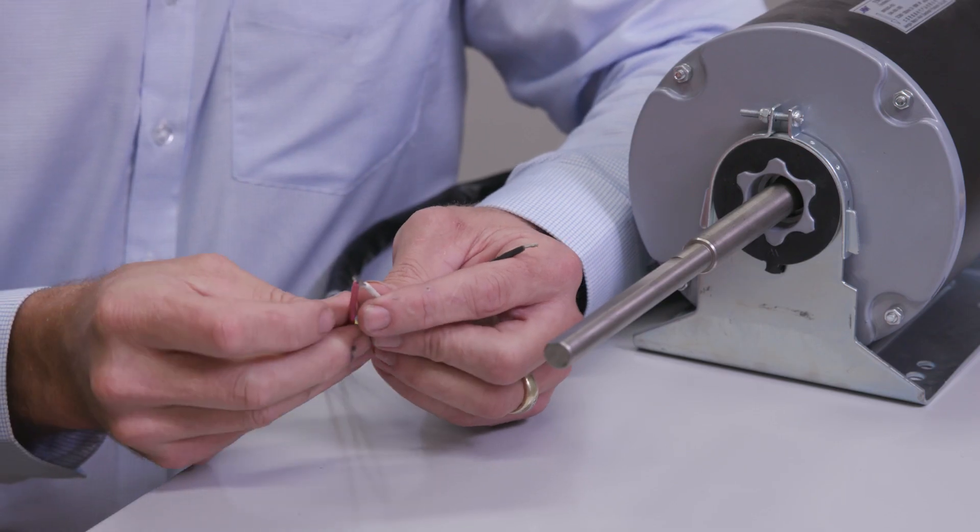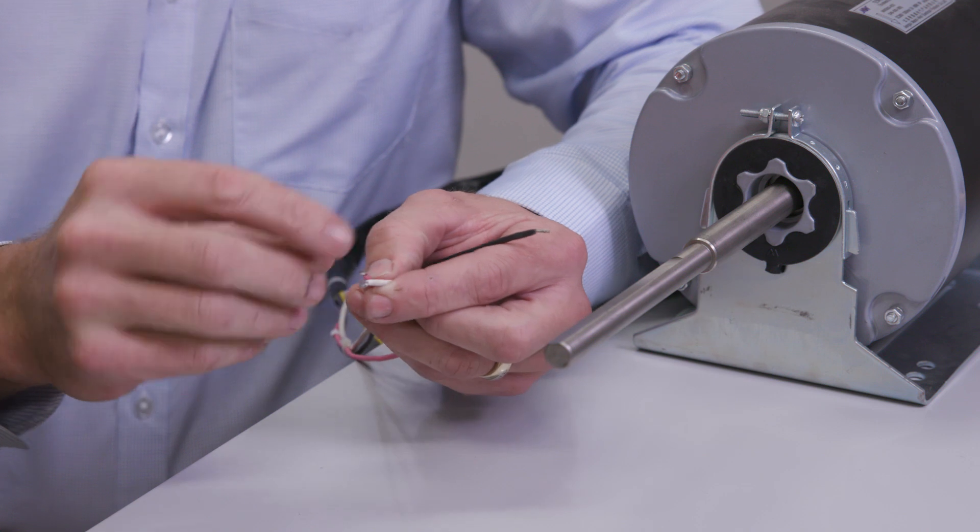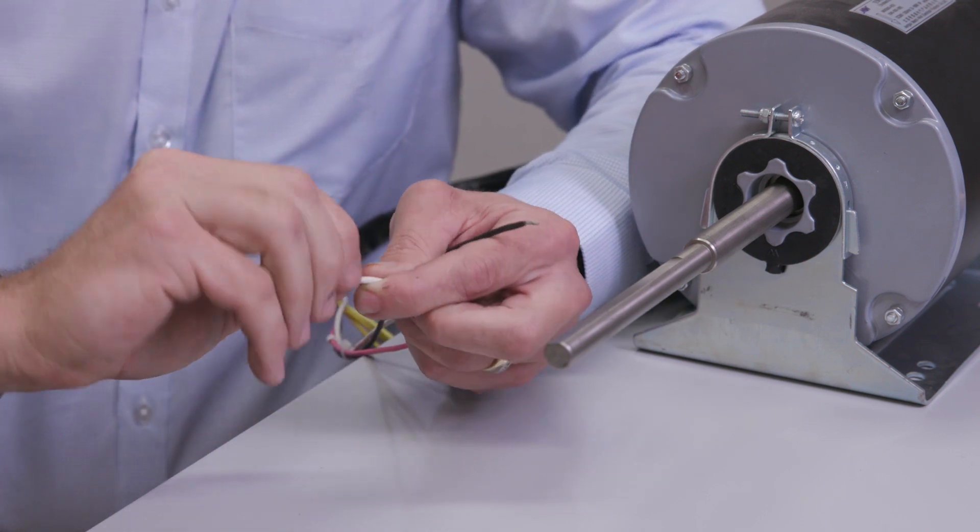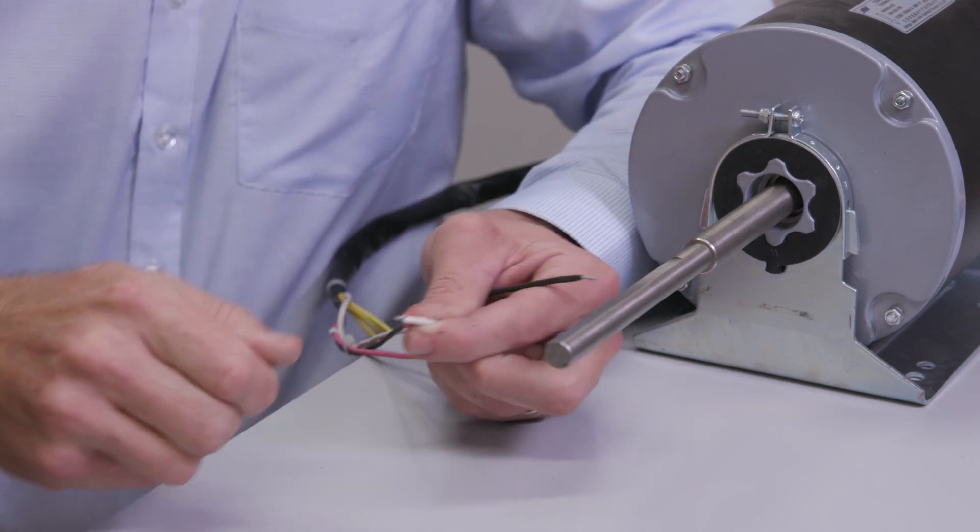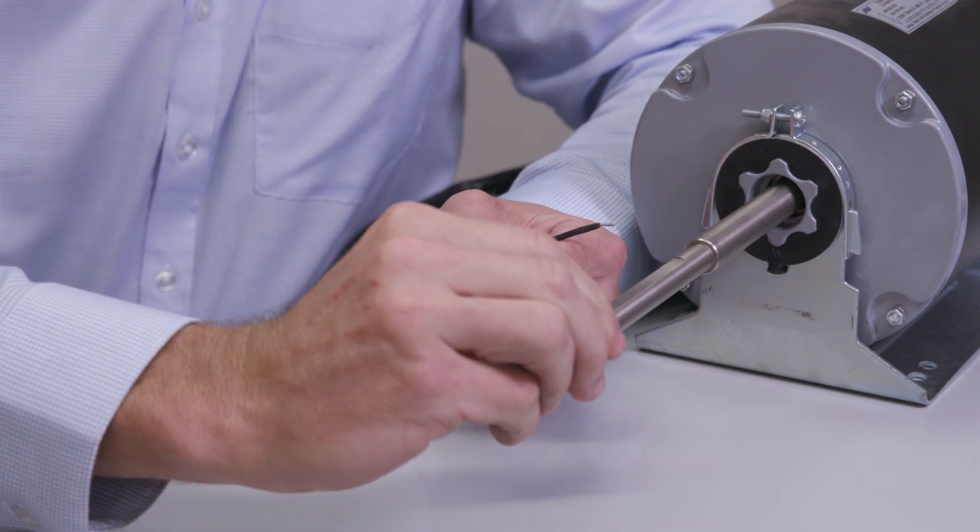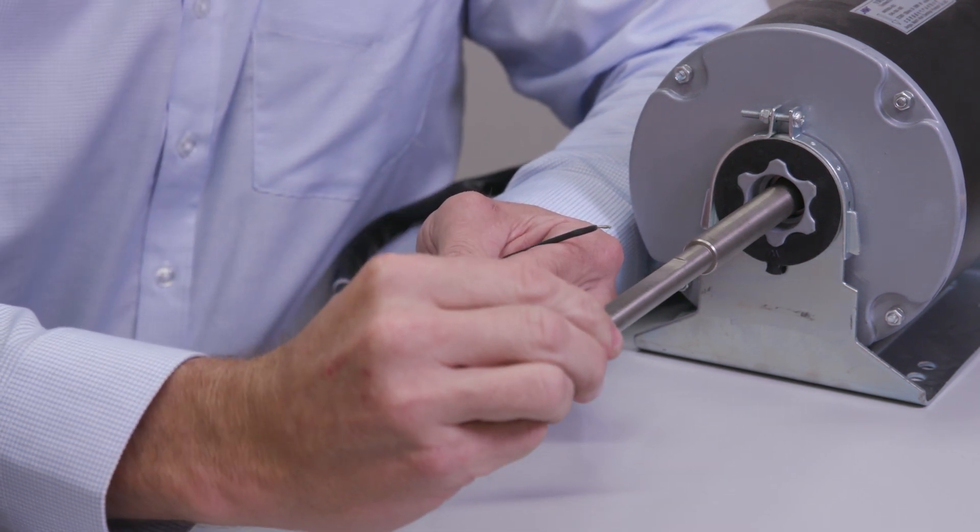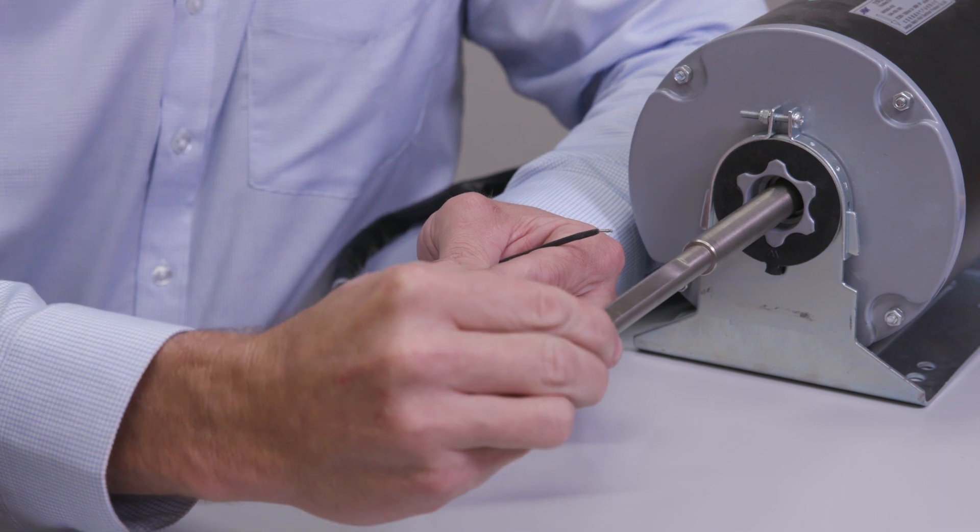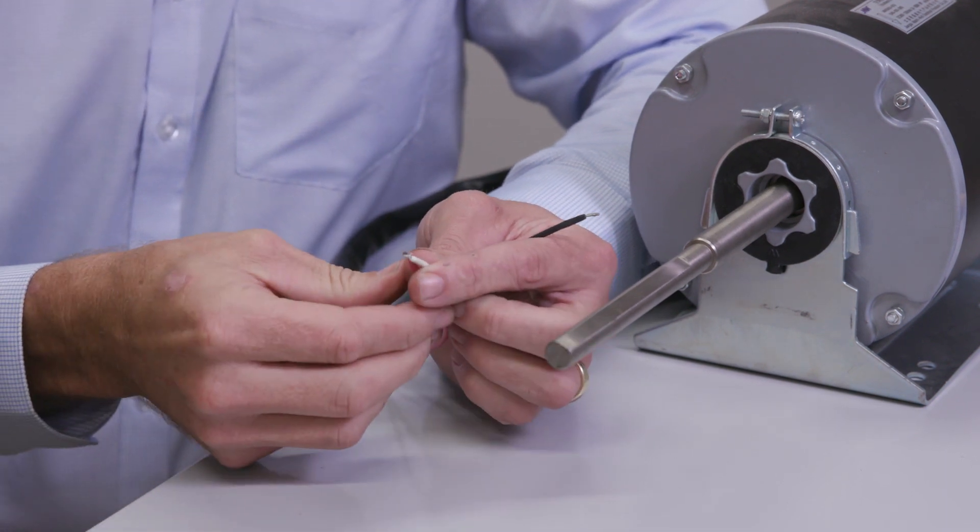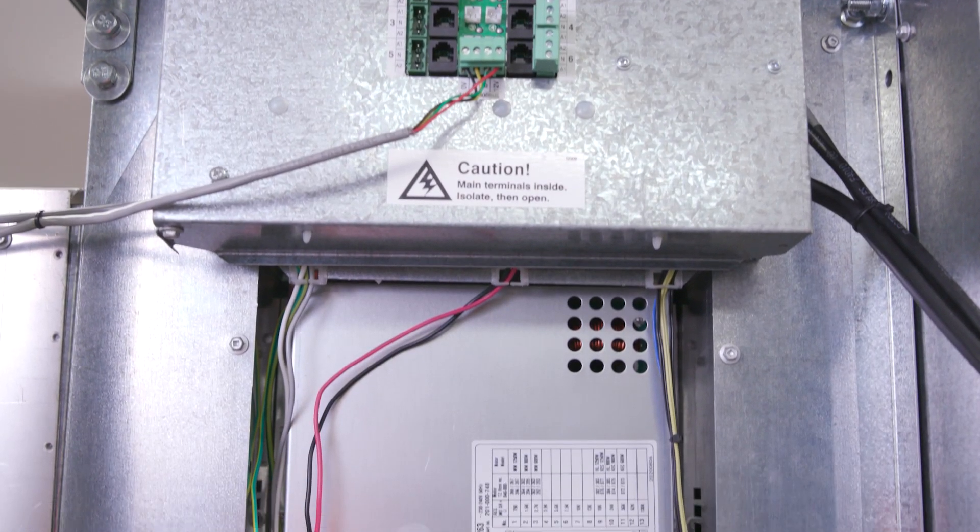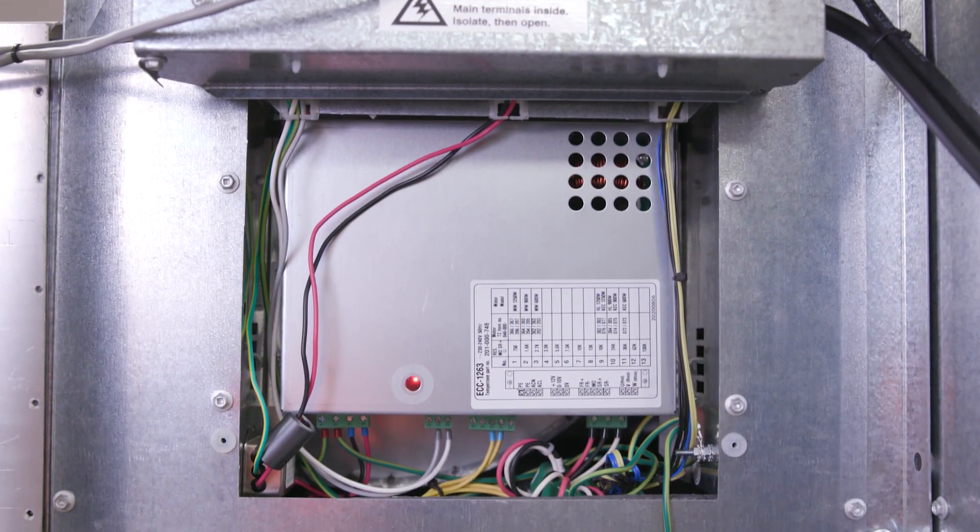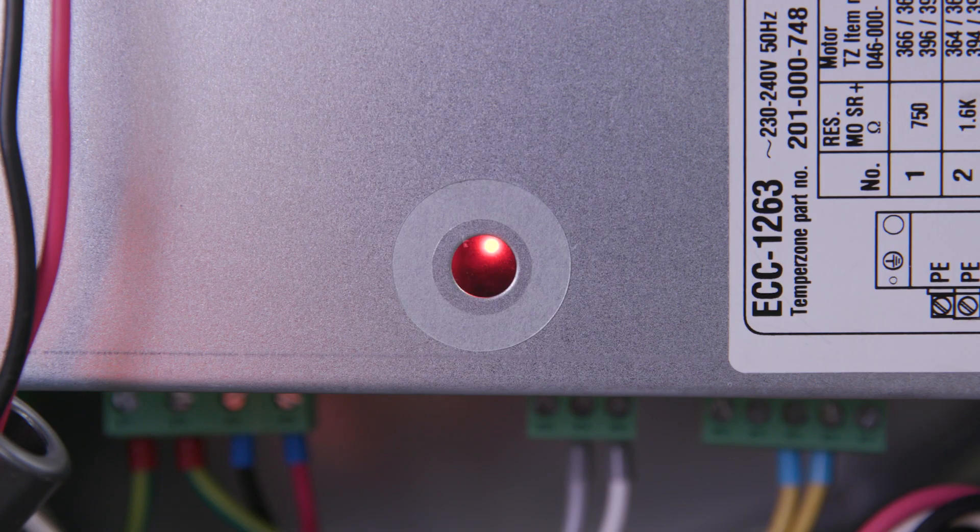The second test for demagnetization is to touch two motor leads together and try to turn the rotor. If the magnets are in good condition, touching the leads will cause the magnets to pull, creating a large resistance to the point where the motor will feel seized. Testing of the external inverter or ECC drive should be conducted using the LED indication light.